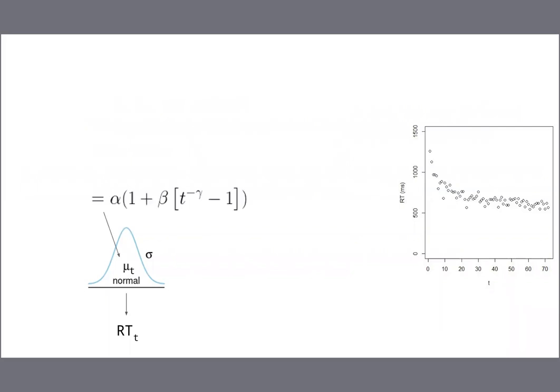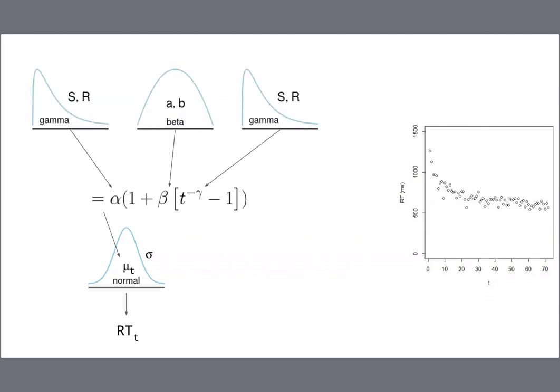To capture the shape of this curve over time, we used a power function with three parameters: mu at time t equals this function. Alpha represents the starting position of the curve at time one. Beta is a value between zero and one and represents the amount of learning that occurs relative to the starting position — if beta is zero, no learning occurs; if beta equals one, the equation asymptotes at zero. This parameterization ensures all predicted values are positive, which is important since response times cannot be negative. Finally, the gamma parameter controls the rate of learning — larger values of gamma result in a steeper curve. We model alpha as being generated by a gamma distribution, beta by a beta distribution, and gamma by a gamma distribution. Each of these distributions has its own set of parameters, and we put vague priors on these six parameters.